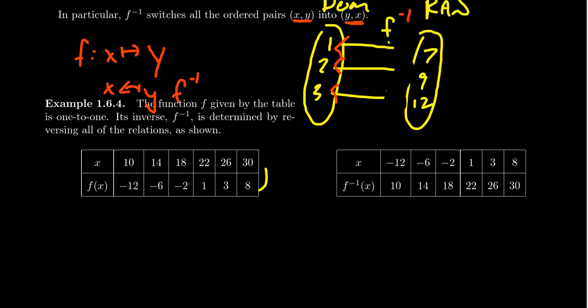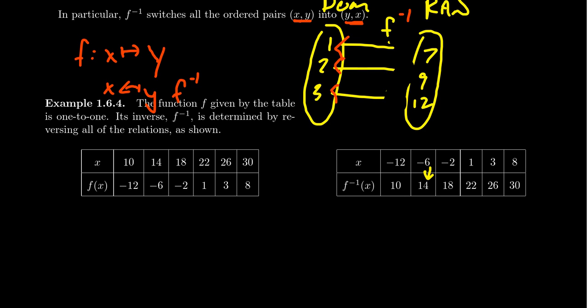Well, f inverse is just going to switch the order of these operations. It's basically like you just switch who's on top, who's on bottom here. f inverse will then take negative 12 and map it to 10. It'll take negative 6 and assign it to 14. And it does that because f is going the opposite direction. f assigned to 14 the number negative 6. f inverse will assign to negative 6 the number 14.